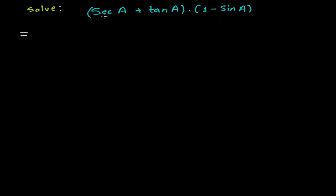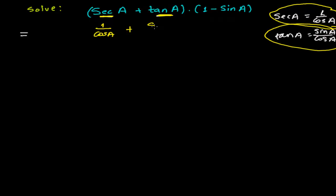Here I'm getting sec, so I know that sec A is 1 over cos A. And tan A is sin A over cos A. So in the place of sec A, I'm going to put 1 over cos A. And in the place of tan A, I'll put sin A over cos A.